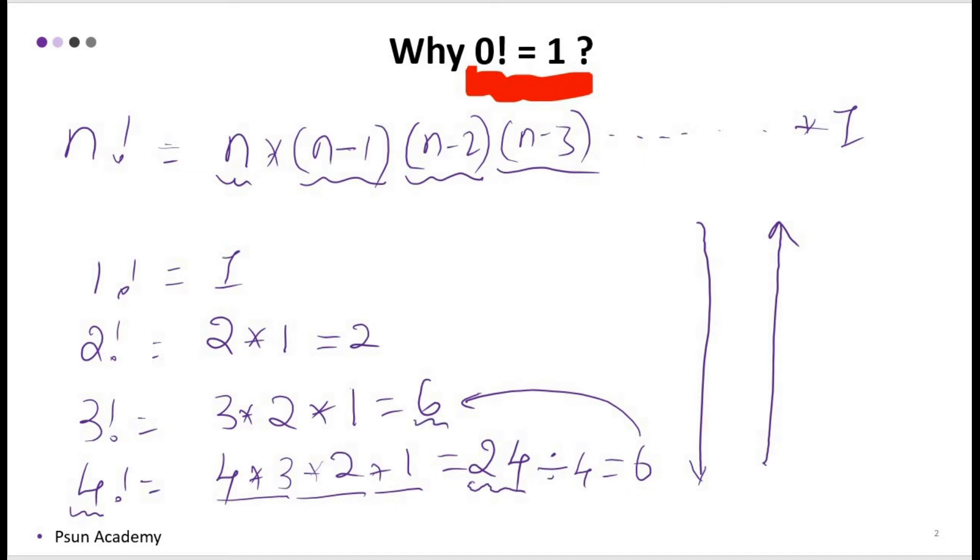6 divided by the n factorial, that is 3, equal to 2, gives the previous factorial answer. 2 divided by the n, that is 2 divided by 2, gives the 1, that is previous factorial answer. So now what I will do, I will write 0 factorial: 1 divided by 1 will give the answer 1.